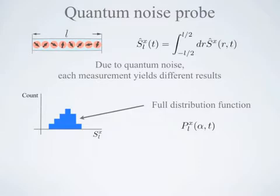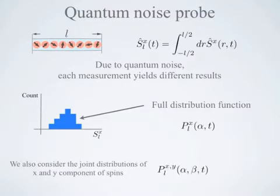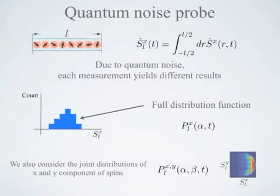Through the measurement of x- and y-component spins, it is also possible to determine the joint distribution function of Sx and Sy, and we plot the joint distributions through the color plot as shown here.